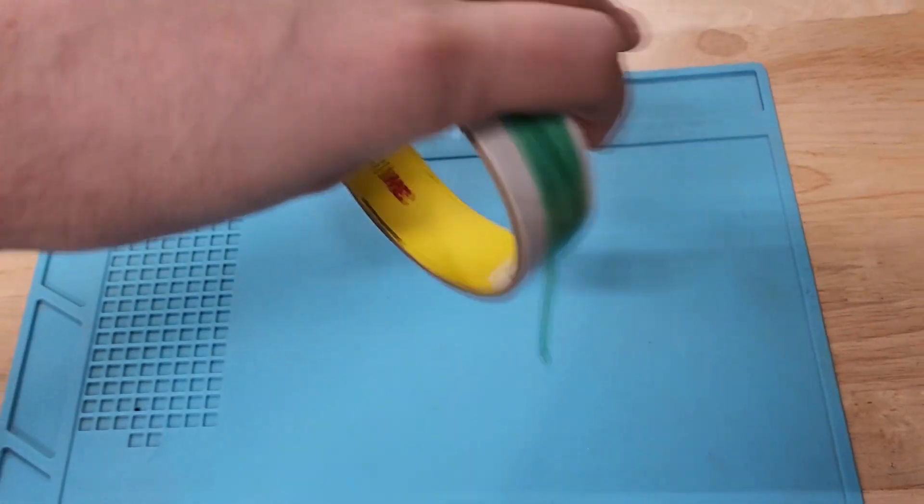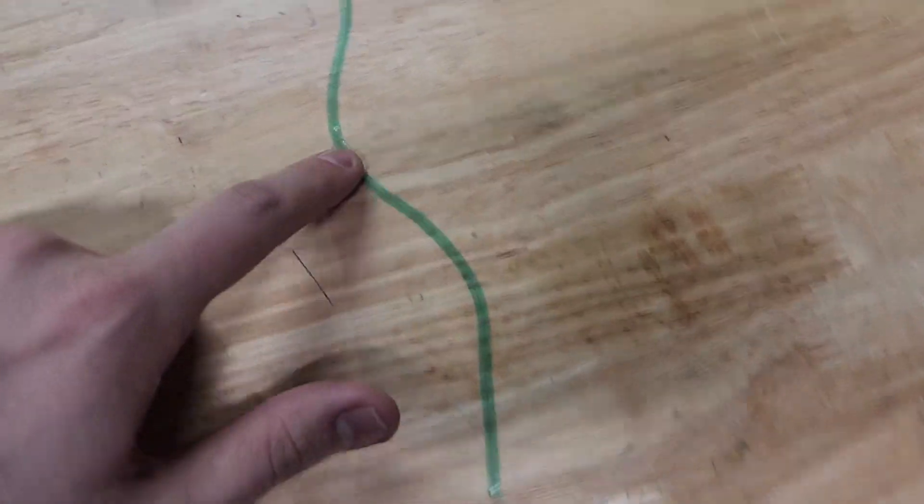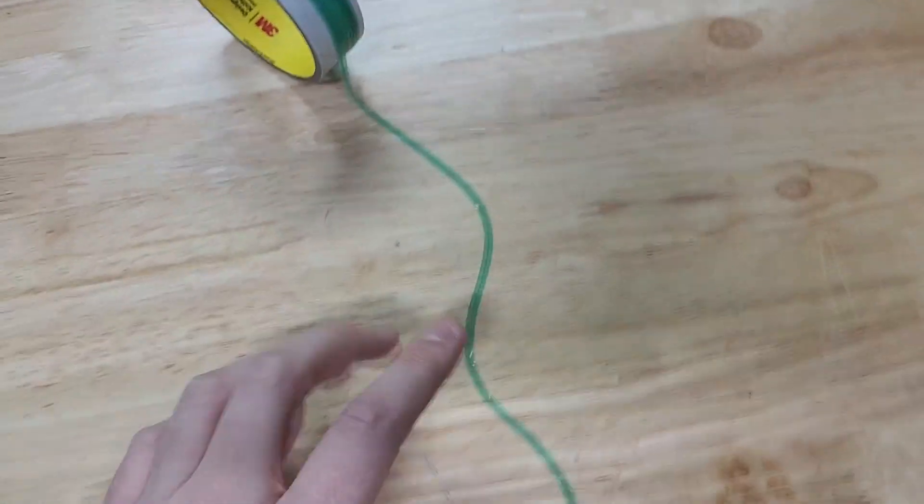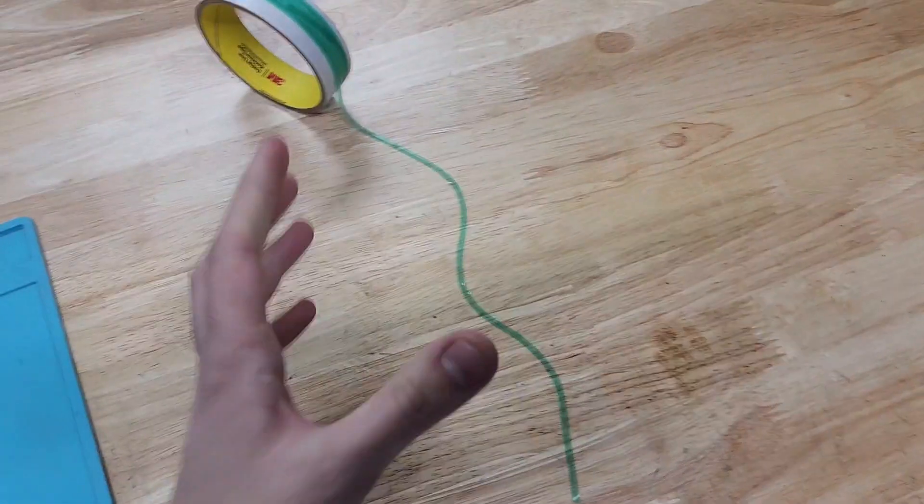Basically, what that means is you can create designs like this. You can see how the edge here goes curvy. This knifeless tape allows you to create those curves without too much resistance.